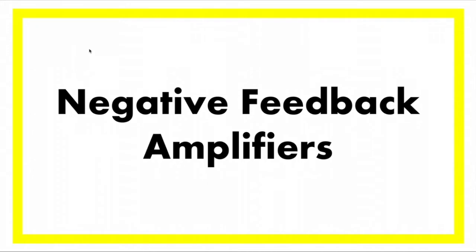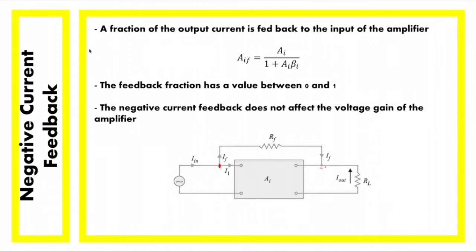Since we are using the current as the energy reference of our system, when doing a negative feedback, we are taking the fraction of the output current and then feeding it back to the input of the amplifier. It is governed by the equation of the feedback current gain AIF, which is equivalent to AI — the current gain on open loop configuration — divided by the quantity 1 plus AI times beta I.